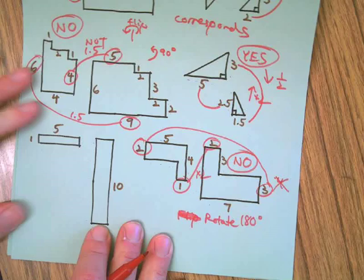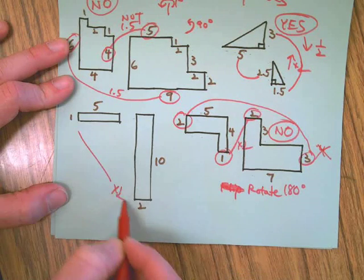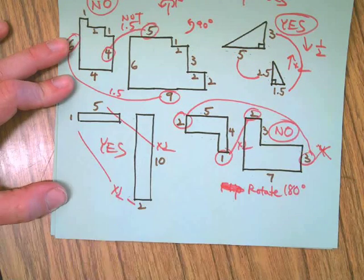One times two is two, two times two is four, but we have a three there so that's a no. Finally, this one - nice and easy, times two, times two, yes. So the trick is finding corresponding sides.